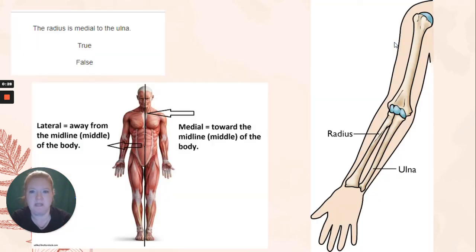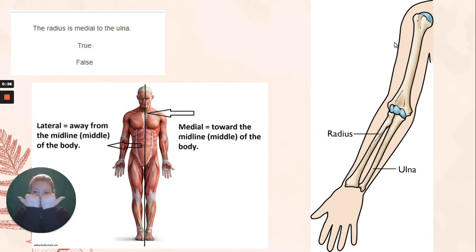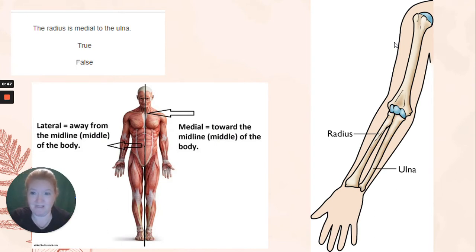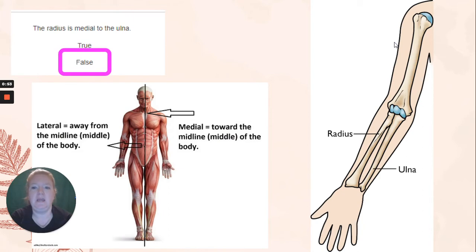So the first topic was names of bones. Here was a question: the radius is medial to the ulna. Medial means closer to the midline; lateral means further away from the midline. The radius is the bone in your forearm that is closer to your thumb, the ulna on your pinky side. Remember, the body is in anatomical position when we have those questions. It would be false — the radius is lateral.